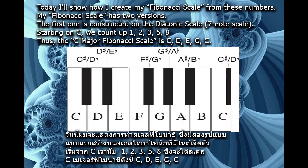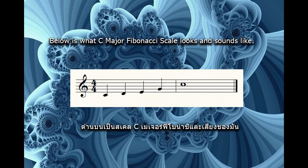Starting on C, we count up 1, 2, 3, 5, 8. Thus, the C major Fibonacci scale is C, D, E, G, C. Below is what the C major Fibonacci scale looks and sounds like.